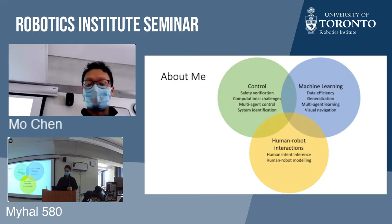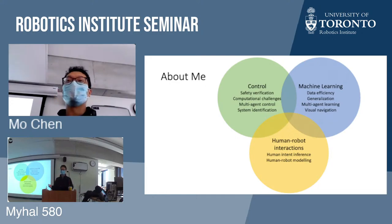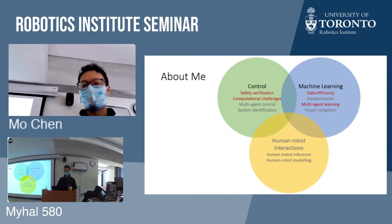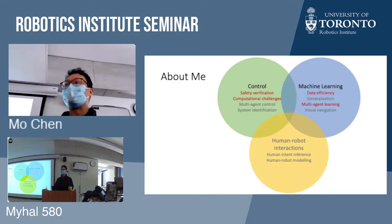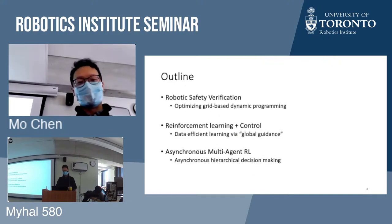We also work on human-robot interaction, with a big focus on human-intent inference and human-robot modeling. Not surprisingly, there's a lot of overlap with machine learning and control as well. Today there won't be time to go through everything, so I'll focus on three highlighted topics: the computational challenges of safety verification, how control can help with data efficiency in RL, and a brief dive into multi-agent reinforcement learning — some very recent work we've begun.